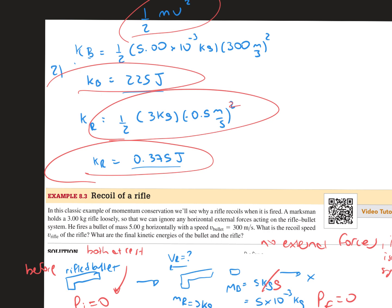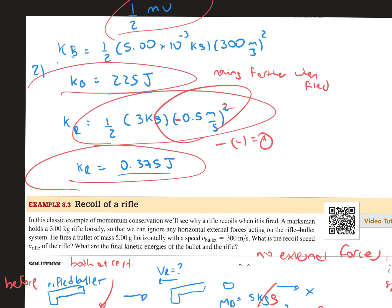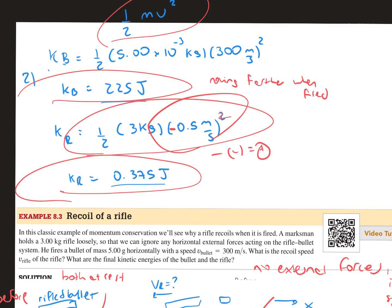The kinetic energy for the rifle is going to be positive, as we square the negative. Negative times negative is positive. In this case, it is normal that the bullet has a higher kinetic energy because the bullet is moving much farther than the rifle when it is fired.